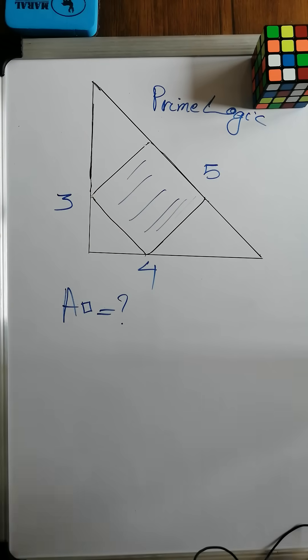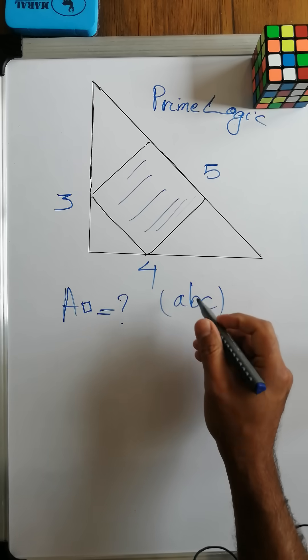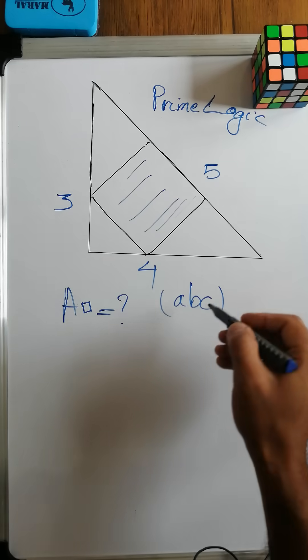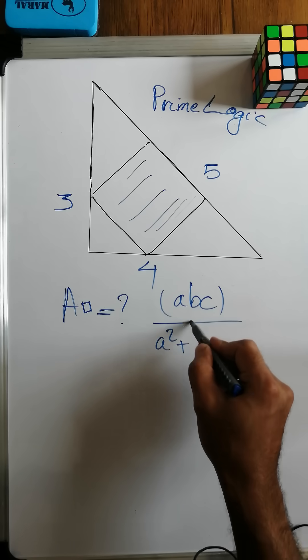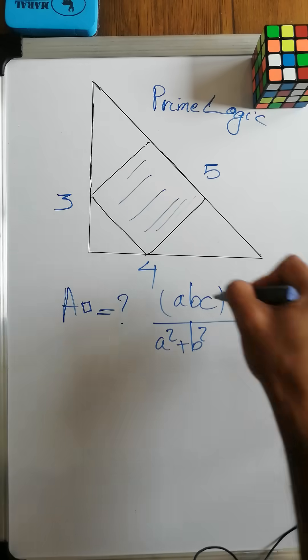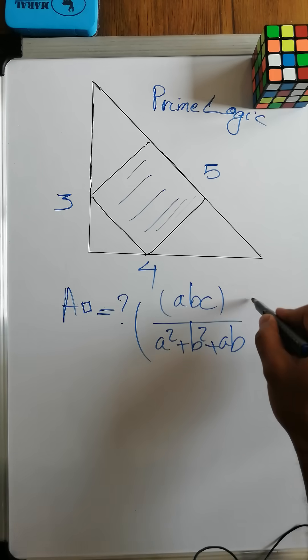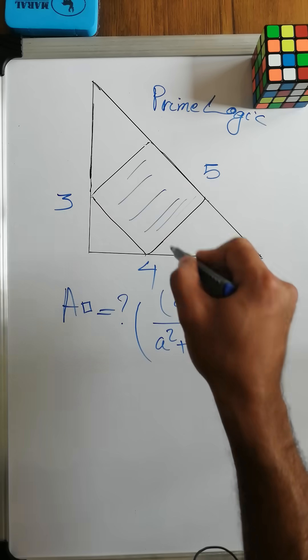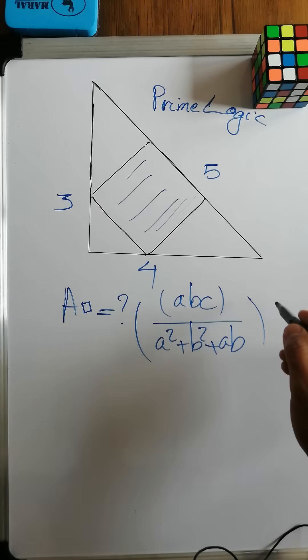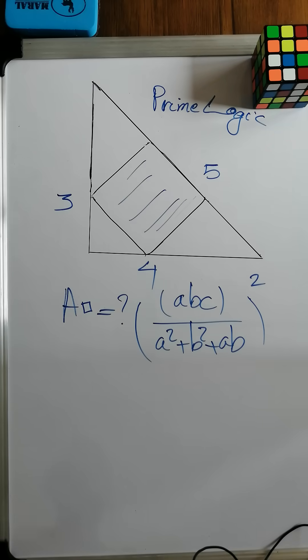The formula says the area of the square is abc, which are the side lengths of this triangle, over a² + b² + ab. That's the product of the height, the base, plus ab. This is the side length of the square, and obviously the area is this whole fraction raised to the power of 2.